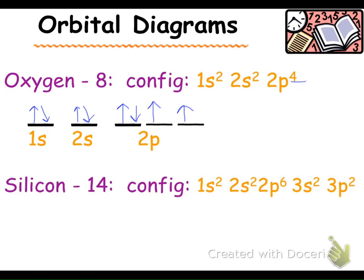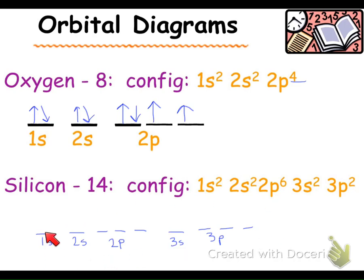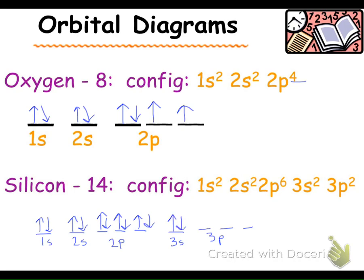For silicon, write the electron configuration first if not given, then draw 1s, 2s, 2p, 3s, and 3p shapes. Fill 1s with up and down, 2s with up and down. For 2p, fill three up arrows singly first, then pair all three with down arrows since p has six electrons. The 3s gets up and down, and 3p has two electrons — fill singly first with two up arrows before pairing up. That's the correct orbital notation for silicon.